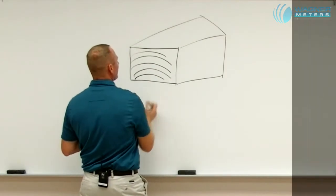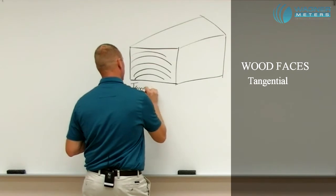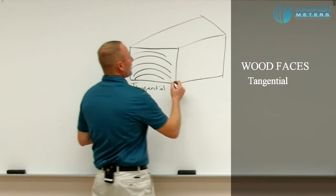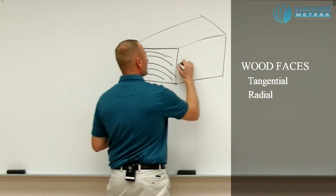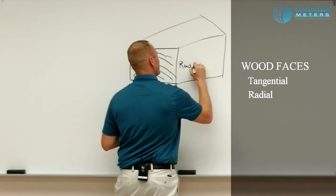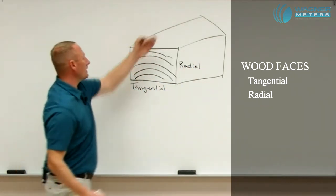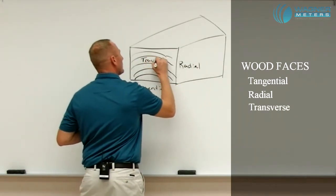So the face that is parallel with the grain is what's known as the tangential. The face that is perpendicular to the grain is known as the radial. And the face, or looking at the ingrain or with the, or the length of that is known as the transverse.